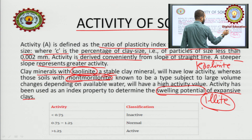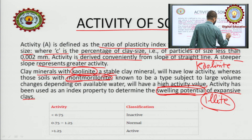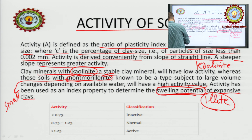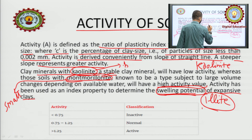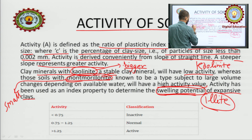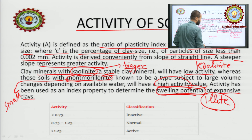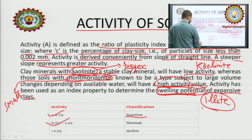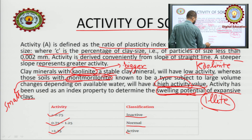If there is montmorillonite present, the soil will have high activity and high swelling property because it is very small in particle size. Kaolinite is relatively bigger in comparison to montmorillonite, so clay containing kaolinite will have low activity, while clay made of montmorillonite will have very high activity and high swelling potential. The general classification is: AC less than 0.75 — inactive; 0.75 to 1.25 — normal; greater than 1.25 — active.